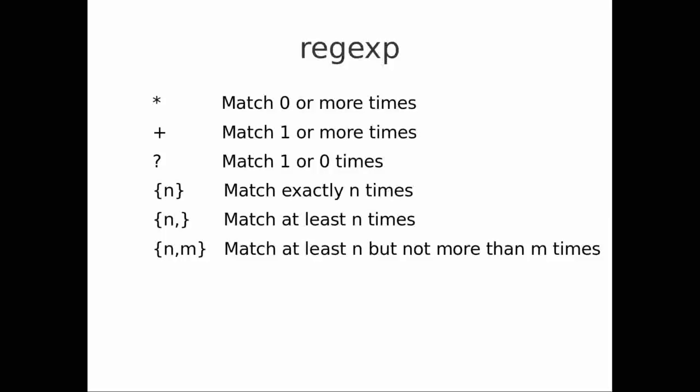The asterisk means match zero or more times — so 'a*' means match zero or more a's. A plus means match one or more times — 'o+' means match one or more o's. A question mark means match one or zero times, so maybe you match or you don't. We can also use numbers within curly brackets to indicate the number of matches: a single number means match exactly that many times, a number followed by a comma means match at least that many times, and two numbers n and m separated by a comma means match at least n but not more than m times.